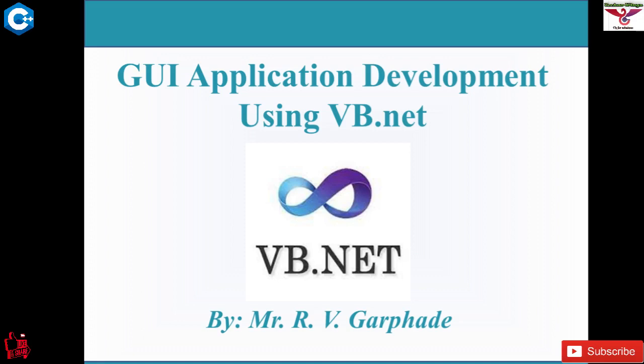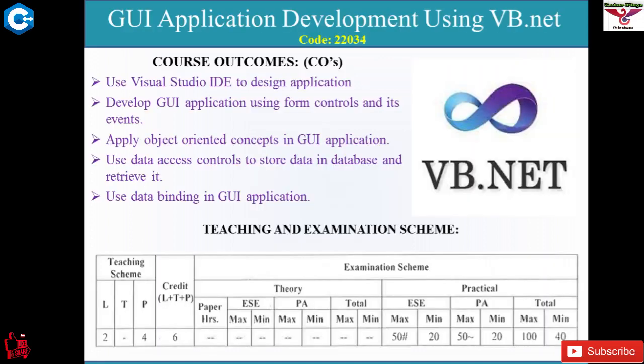So .NET is a framework and VB is a programming language. This is your subject Graphical User Interface Application Development using VB.NET, and the course code is 22034. This is a practical subject, not a theory subject like your regular subjects.